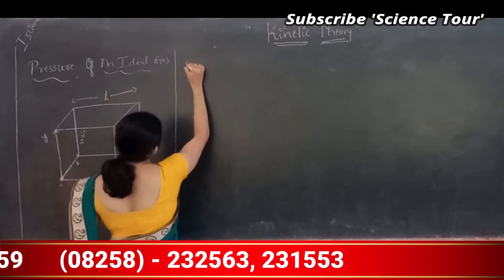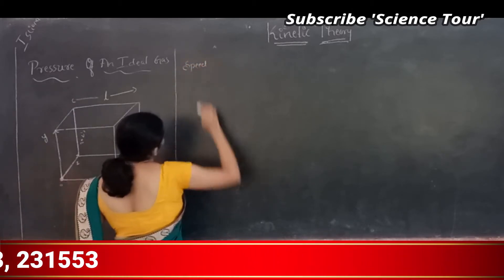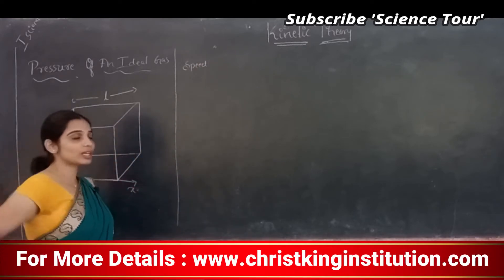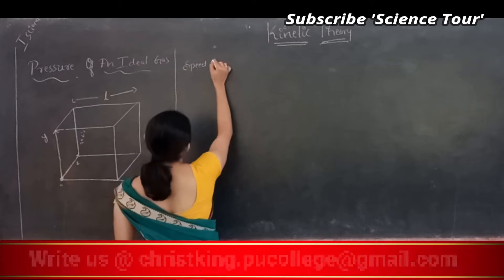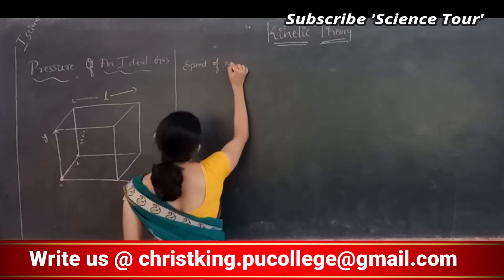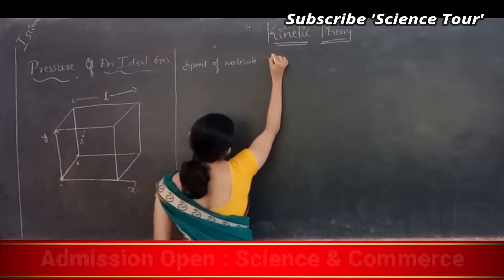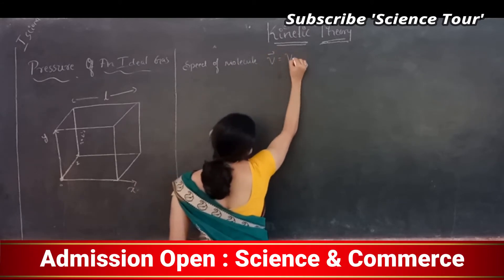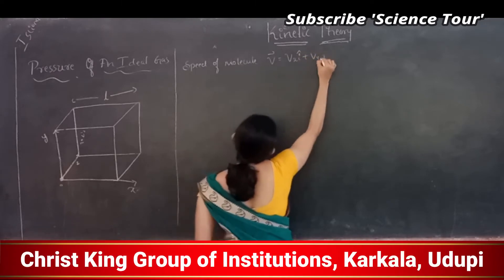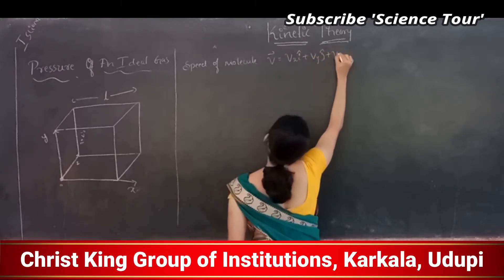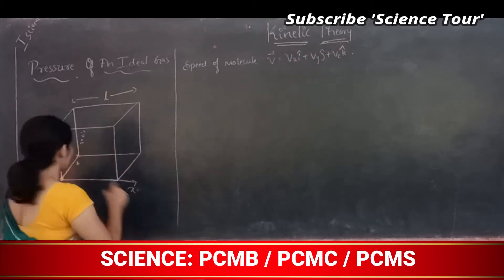V is a vector quantity — the molecule is moving in a three-dimensional box. The speed or velocity of one molecule is nothing but V = Vx·î + Vy·ĵ + Vz·k̂. Here Vx, Vy, Vz are the x, y, and z components of the velocity of this molecule.